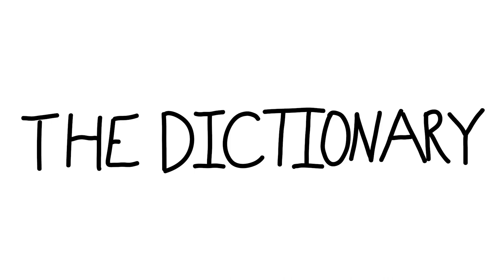Hello, word nerds. Welcome to the dictionary. The first word in this episode is can, C-A-N. First form — this one is a verb. There's so much information I have to skip. You could say can or kin — some people say kin in different dialects. This is a verb from before the 12th century. It is old.